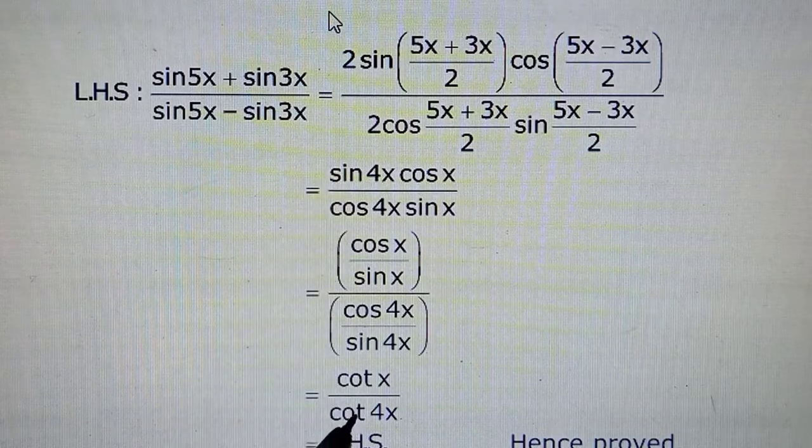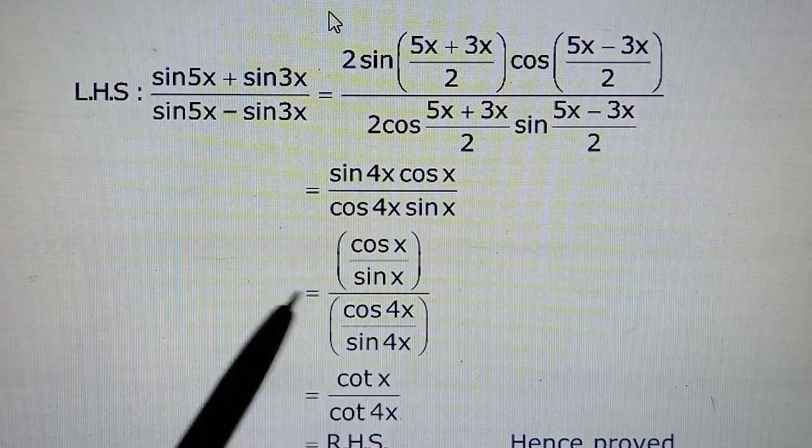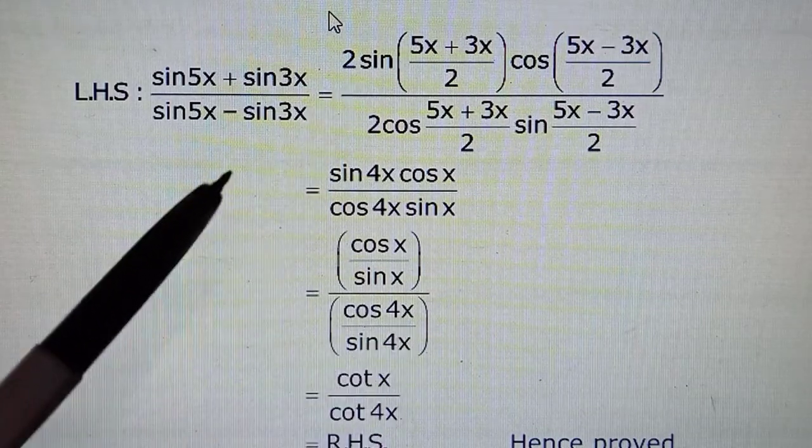But hamein proof mein cot chahiye tha, toh hum isko cos upon sin ko denominator mein cot 4x bana le rahe hain, and cos upon sin ko cot as per the requirement of the proof. So it's simple enough.